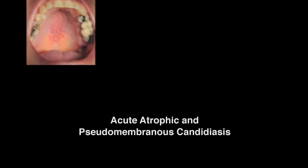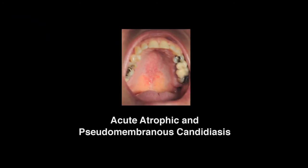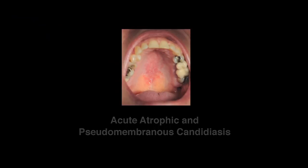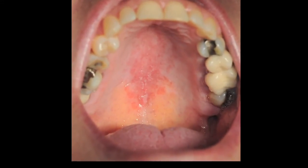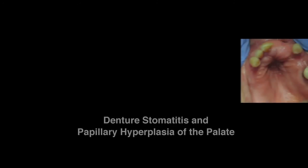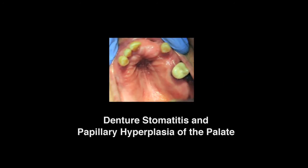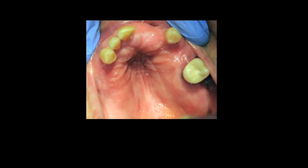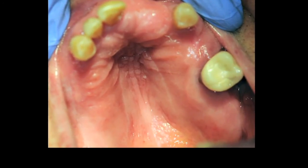Moving on to the hard and soft palate, this patient is presenting with acute atrophic and pseudomembranous candidiasis, frequently seen in patients using asthma inhalers who are not directing the mist into their lungs. This patient is presenting with a denture stomatitis. It is important to remember to remove your patient's dentures during an intraoral exam. Denture stomatitis occurs immediately below the denture base, and the tissue appears red and swollen.